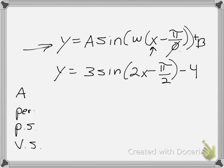So to make things simple, what I recommend is factor out the coefficient of x if it's not already 1. So in this case, I'll make it 3 sine of 2(x - π/4) minus 4.